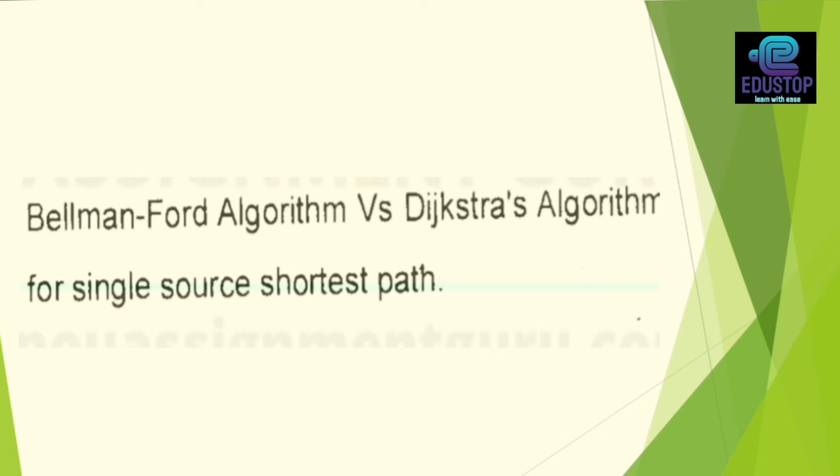Next, you have Bellman-Ford algorithm and Dijkstra algorithm. For shortest path, it is used for single source shortest path. So Bellman-Ford is for negative weights and Dijkstra is for positive weights. So we get the single source shortest path. Both of us will tell you the difference between these. So you have to study this one. This is an important question.